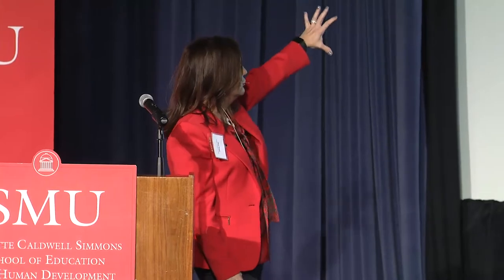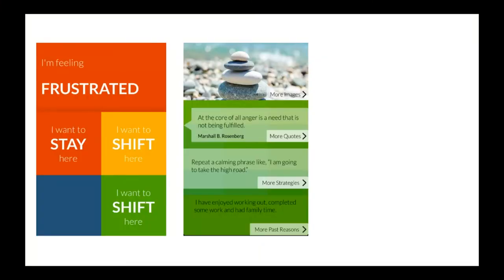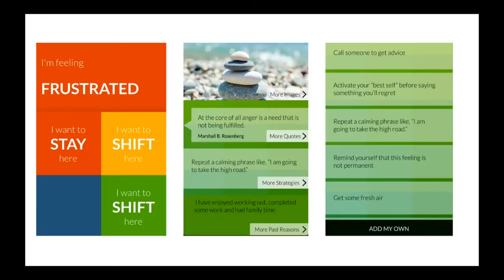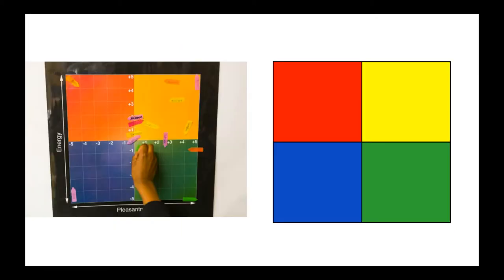Say I'm frustrated and want to move to the calm area — the mood meter pops up a quote, strategies I can use, and past reasons I was calm. I can even add my own strategy. You're thinking, 'I can't use this with students — I don't let them have phones out.' So you can make a poster of it. If a student comes in at the top quadrant — fury — you know they need to regulate. Students can plot their own position on it; it's also a great math tool.